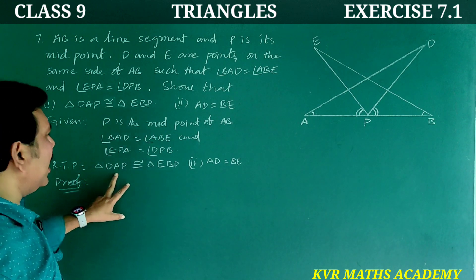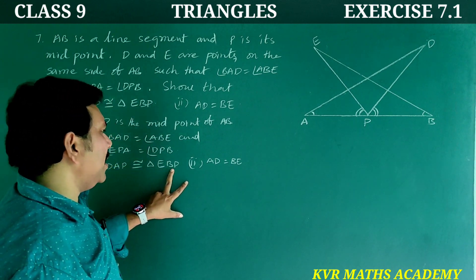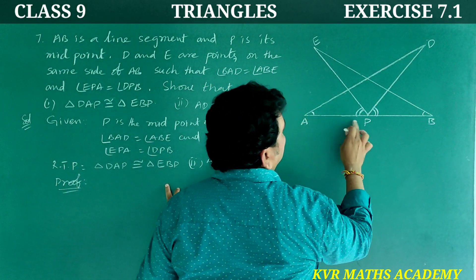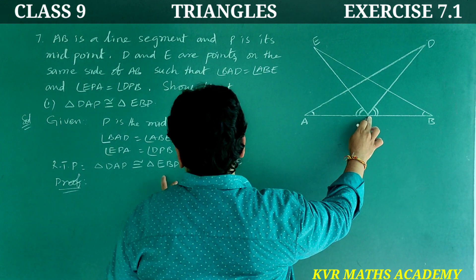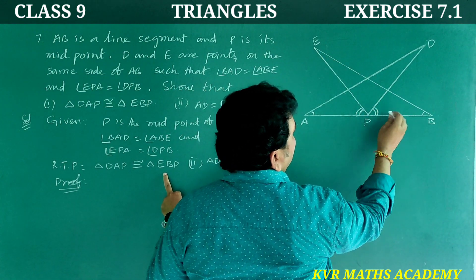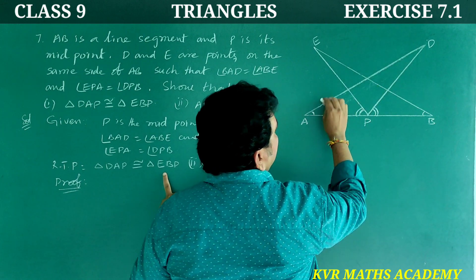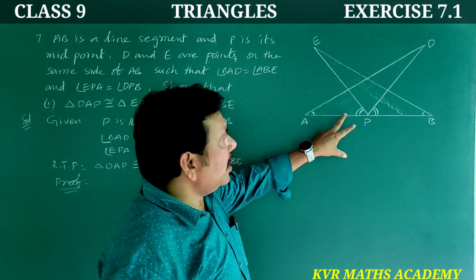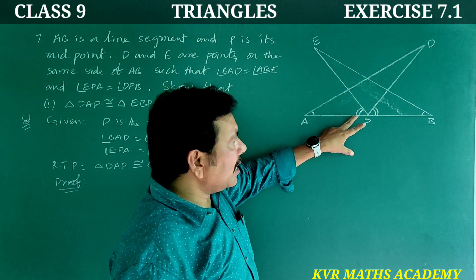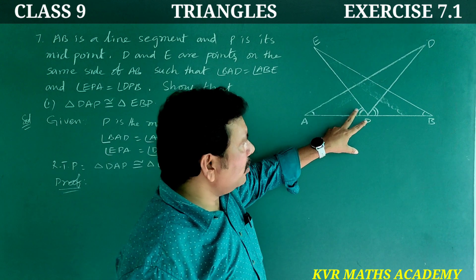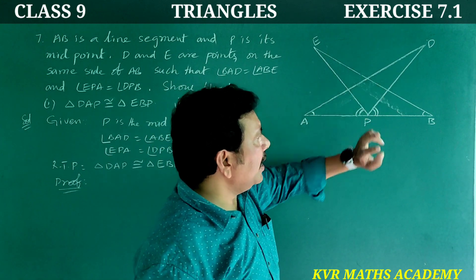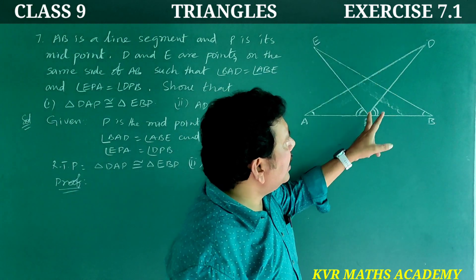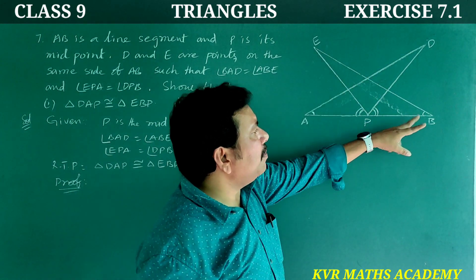Solution: Given that P is the midpoint of AB, angle EPA is equal to angle DPB. To prove: triangle DAP is congruent to triangle EBP, and AD is equal to BE. Now, in these two triangles, the angle here is APE — not APD — and here is DPB, but EPB is not the angle directly given.